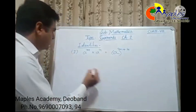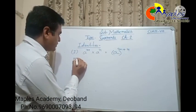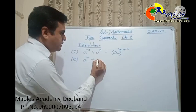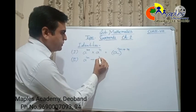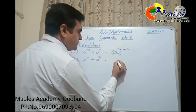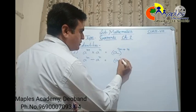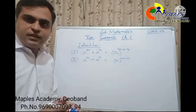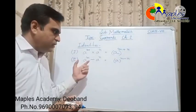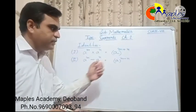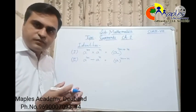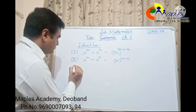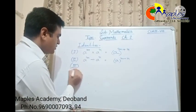The second identity is: a raise to the power m divided by a raise to the power n gives us a raise to the power m minus n. If the bases are the same and powers are different and they are in division, then we subtract the powers.